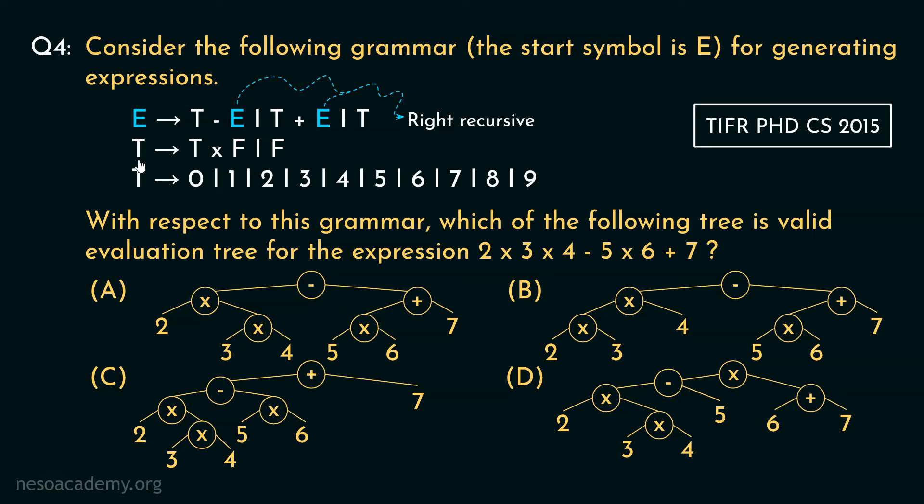Now in here the non-terminal T can either be rewritten as T into F or F. So in this the variable T is the leftmost non-terminal in the right hand side. So this rule is left recursive. So the multiplication operator is left associative and has higher precedence whereas the operators minus and plus are right associative and have equal precedence.